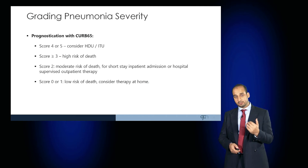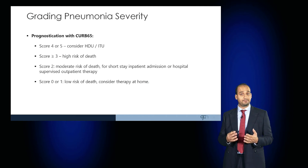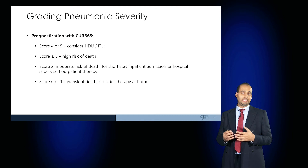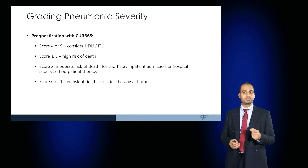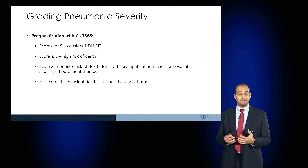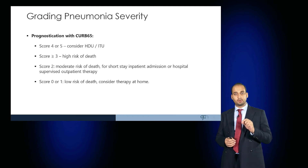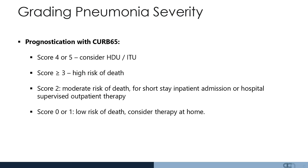If the CURB65 score is high — four or five — consider level two or three care in high dependency or intensive care. If the score is three, the patient is at high risk of death. A score of two represents a moderate risk of death, and these patients should be admitted to hospital for a short stay or supervised outpatient therapy. Patients with a score of zero or one are considered to have a low risk of death and can be considered to have therapy at home.